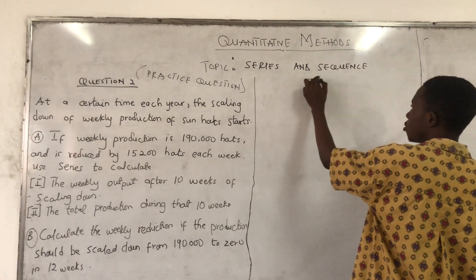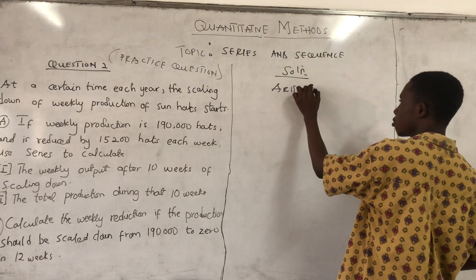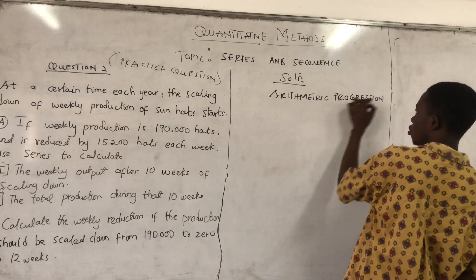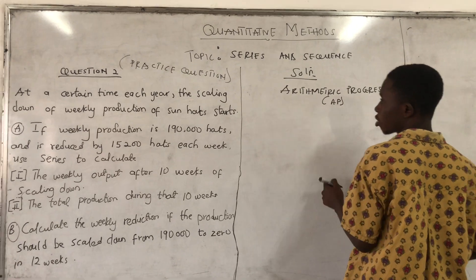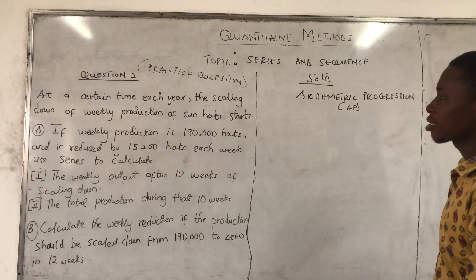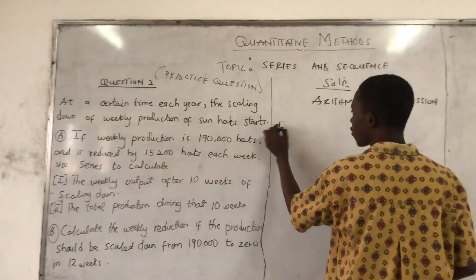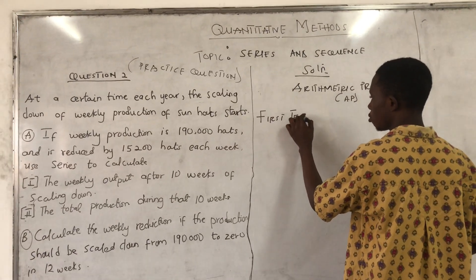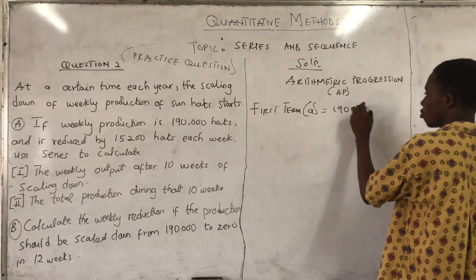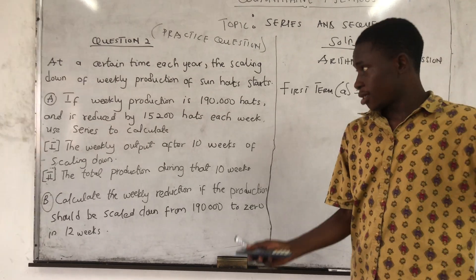So let's start. Solution. So we are using arithmetic progression. So let me give you the information. At a certain time each year, the scaling down of weekly production of Sunhouse starts. If weekly production is 190,000 — that is our first term, noted by A: 190,000.